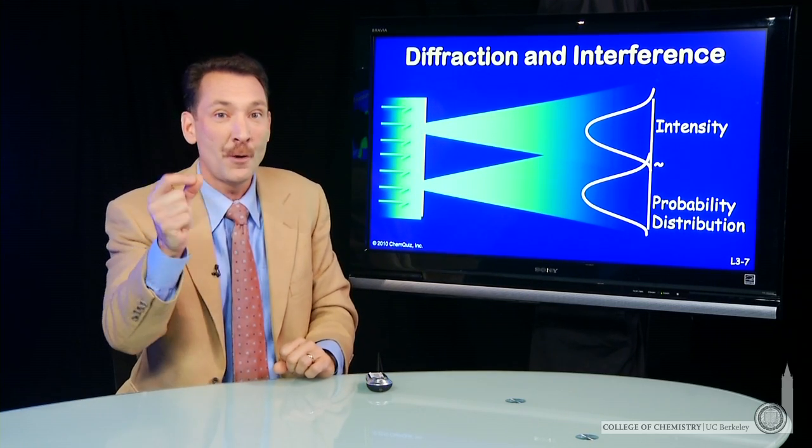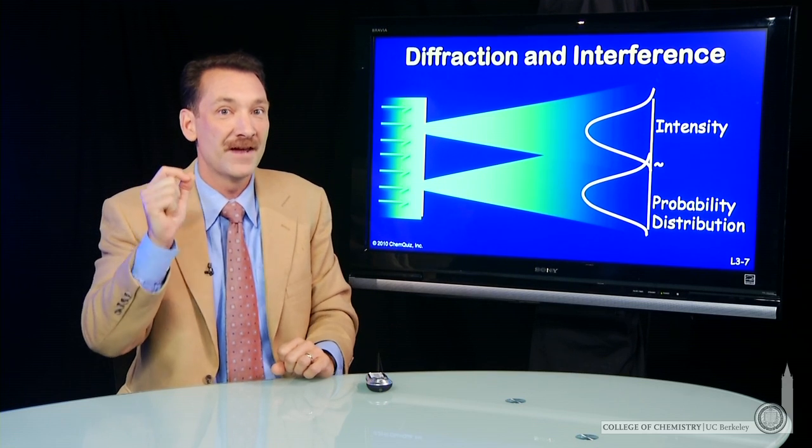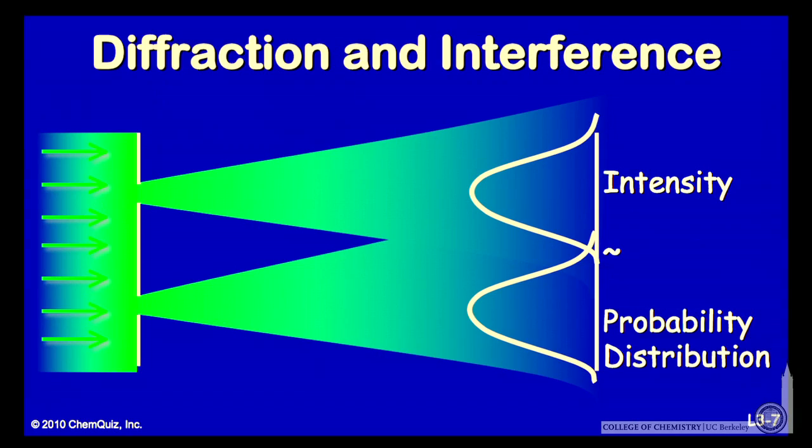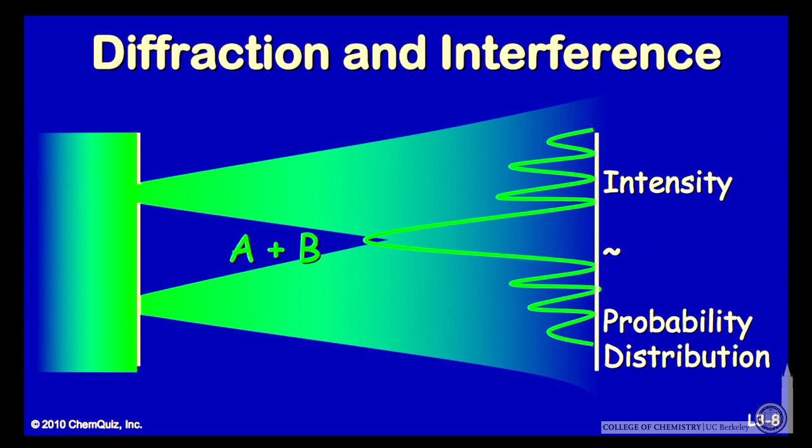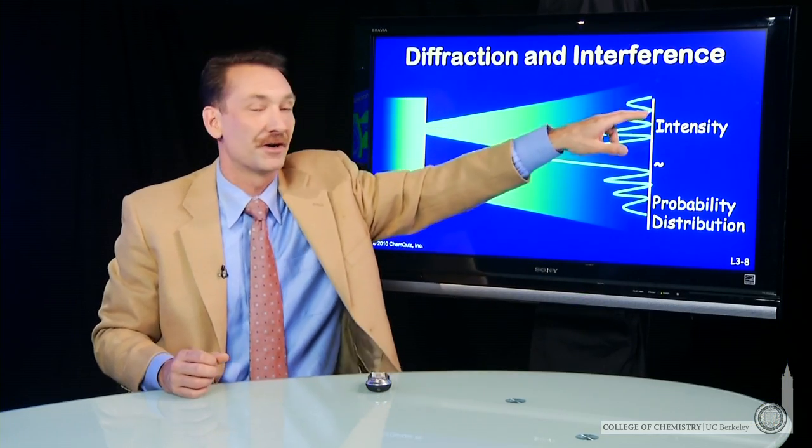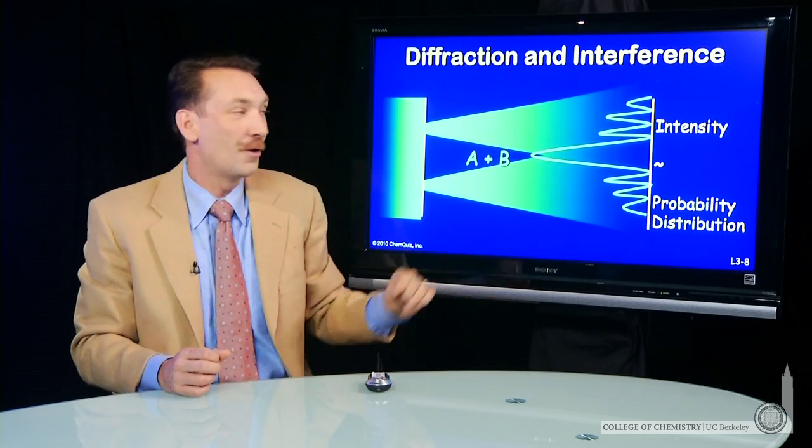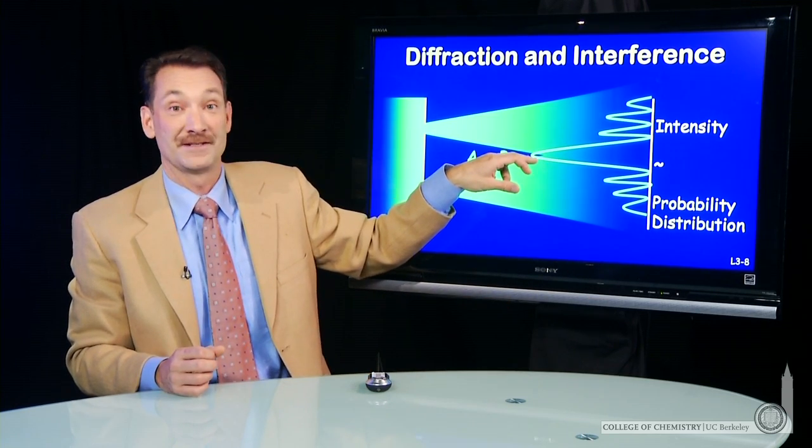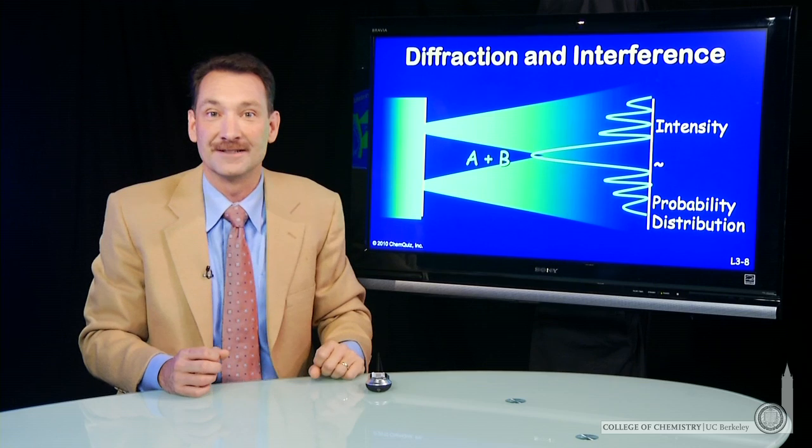But if you arrange the slits appropriately, you get a very distinct pattern. Instead of two strong intensities across from slit A and slit B, what you actually see is a pattern of intensities, light and dark spots that aren't directly across from the slits. So you see bright spot, dark spot, bright spot, dark spot, bright spot, dark spot. Alternating away from the center of the slits, the brightest spot is actually right between the slits.